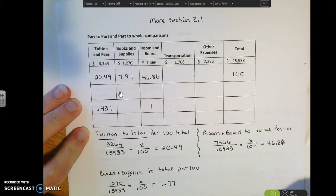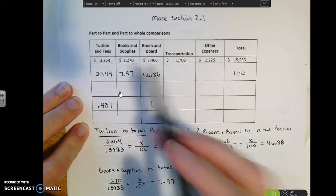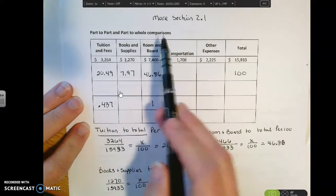All right, this is the second part for section 2.1. In this part we're talking about what they call part-to-part or part-to-whole comparisons.